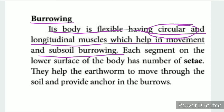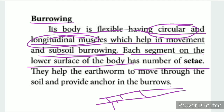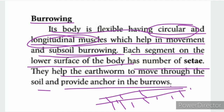The earthworm's body is flexible, having circular and longitudinal muscles which help in movement and sub-soil burrowing. Each segment on the lower surface of the body has tiny hair-like structures called setae, which help move through soil, provide anchor in the burrows.